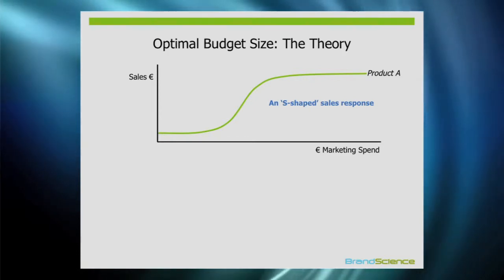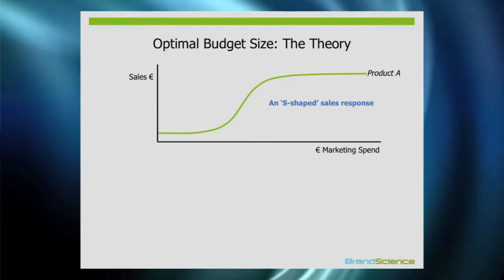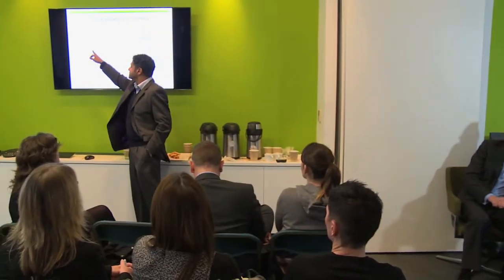Typically we're going to see an s-shaped response function. If we spend nothing on marketing we still have some sales — a base level of sales. If you spend one euro on marketing there's nothing much you can do with that, so the southwest part of that curve is quite flat. As you spend more you get increasing returns, and then finally there's only so much market share you can buy through marketing — you can hit a saturation point.